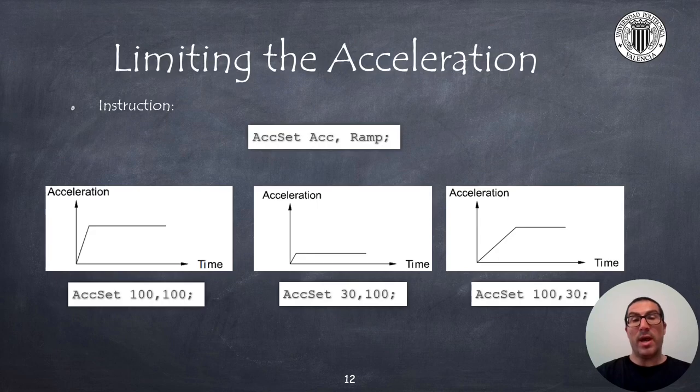When a robot has to transport delicate objects, we might be interested in controlling not only the speed but also the maximum acceleration and the slope of the acceleration, known as jerk. The AccSet instruction allows you to limit the maximum acceleration value and also to set the acceleration ramp. Here, we show the acceleration profile for three possible settings. In the first one, the robot moves at the maximum acceleration and the shortest possible time, which is the default setting.